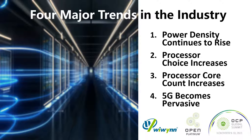The third trend is that processor core density is also increasing — core count is increasing — which means there is potential for realization of more resources and more efficient usage of resources. And then the fourth trend is 5G. We're seeing 5G and a lot of applications on 5G, so what are we doing about that? That would be the fourth trend.